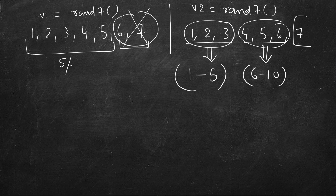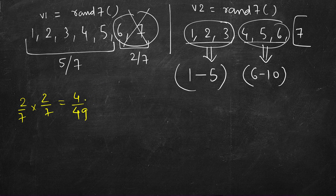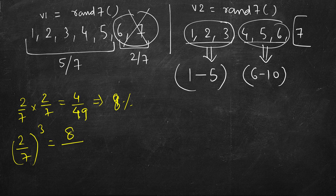The probability of getting 1 to 5 is 5/7, and getting 6 or 7 is 2/7. Getting 6 or 7 in two consecutive calls of rand7 is (2/7)² = 4/49, which is roughly 8-9%. If it appears again in a third call, the probability is (2/7)³ = 8/343 — a very small number.